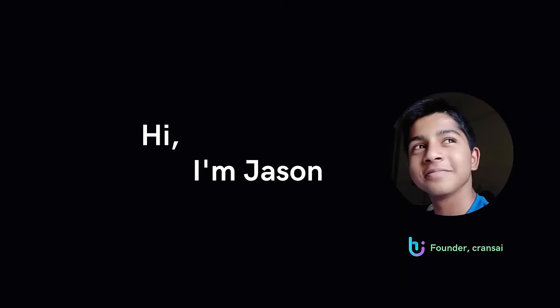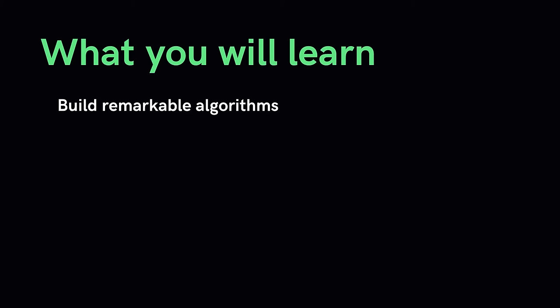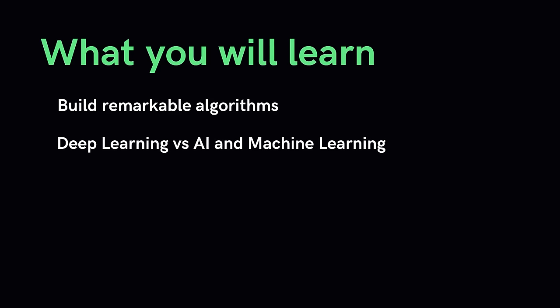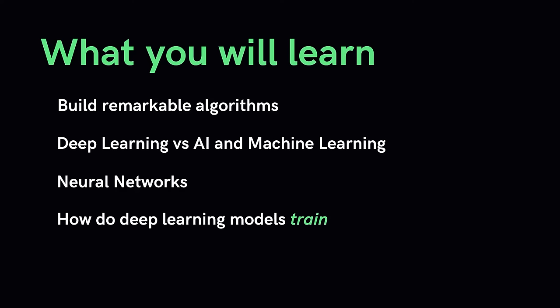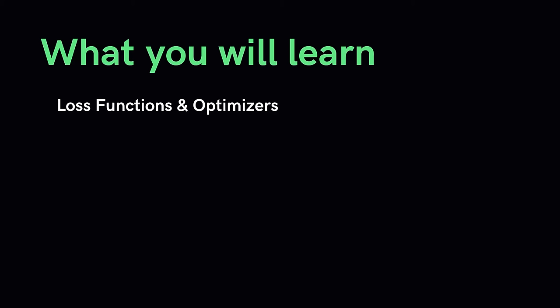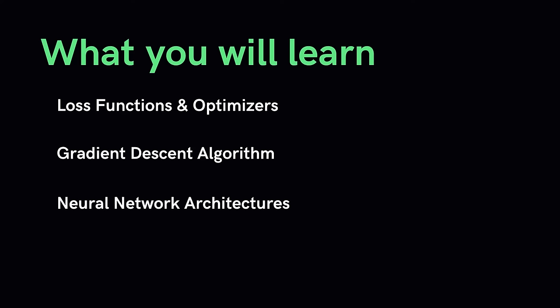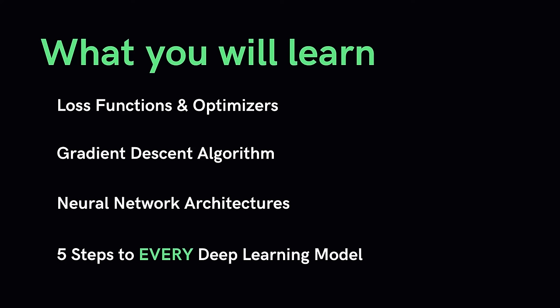My name is Jason and welcome to this course in Deep Learning, where you'll learn everything you need to get started with deep learning in Python — how to build remarkable algorithms capable of solving complex problems. We'll talk about what deep learning is, the difference between artificial intelligence and machine learning, neural networks, how deep learning models train, supervised, unsupervised and reinforcement learning, loss functions, optimizers, the gradient descent algorithm, and the different types of neural network architectures.